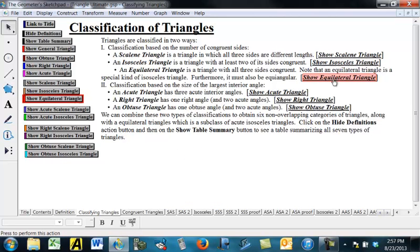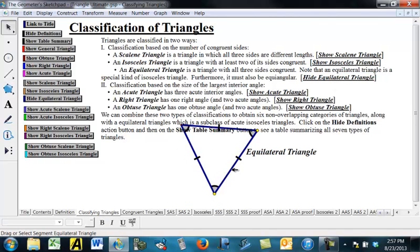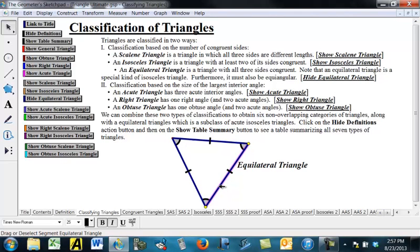Now, a special case of an isosceles triangle is an equilateral triangle, in which all three sides are congruent to each other, and it turns out all three angles are congruent. So, it's not only equilateral, it's actually equiangular as well.